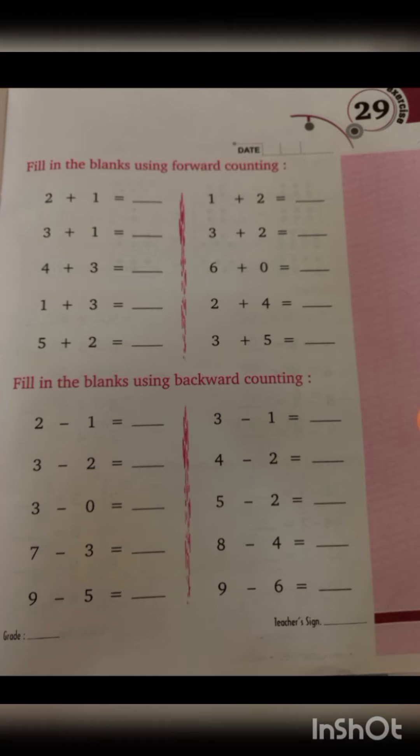आप 4 plus 3 लेते हैं. So 4 plus 3. बस, जो मैंने पहले आपको बताई हुए है technique, कि बड़ी digit से start करना होता है, और 3 तक count करना है. So 4 के बाद, 3 तक आपको count करना है. 5, 6, 7. ये तो मैंने आपको line करके दिखा है, आपको lines भी नहीं draw करनी होती है. आप fingers पे कर लीजिए या बस 3 बार पढ़ दीजिए. So answer is 7.